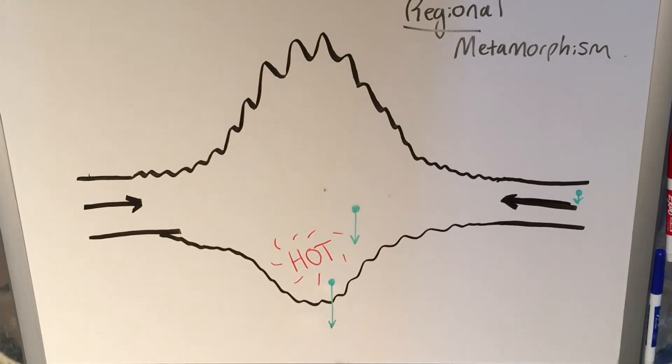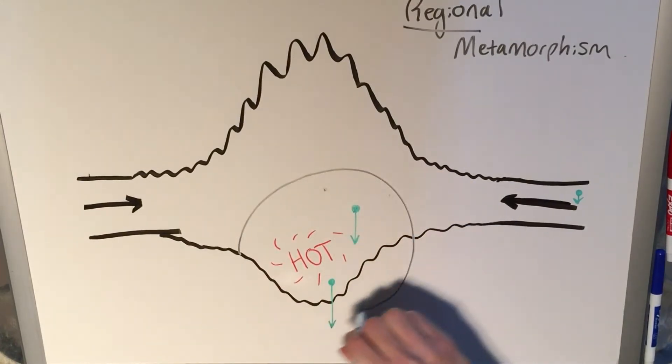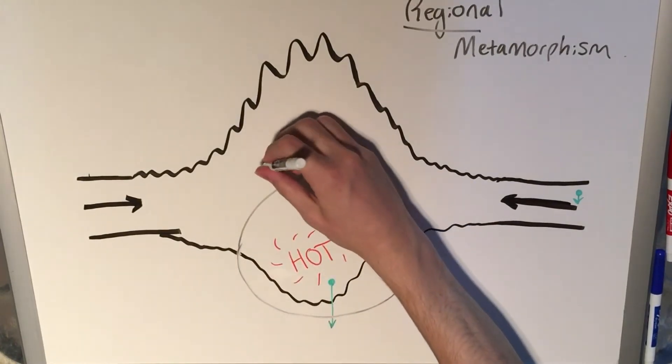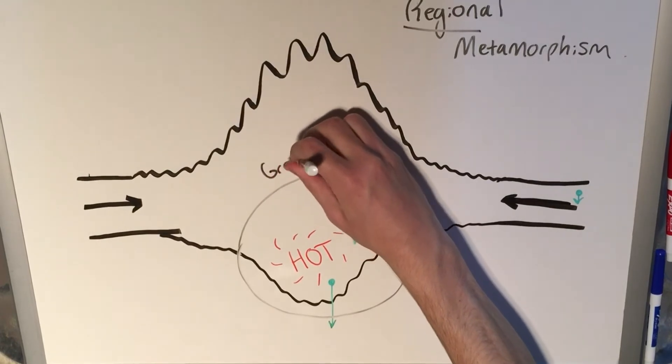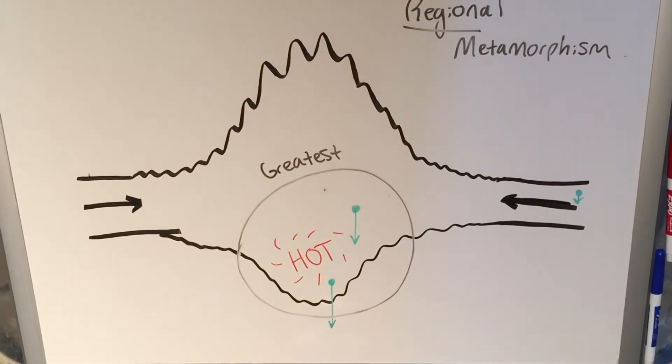And you'll recall that metamorphism is based on heat and pressure. So at this region here, if we are to just sort of circle it, maybe in the root of the mountain, this is where there is the greatest metamorphism. You will have the highest grade of metamorphic rock.